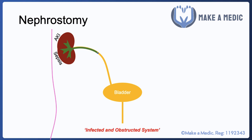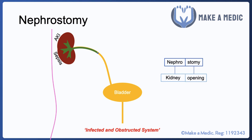Nephrostomy is done in an emergency when you have an infected and obstructed system. Assessment will likely reveal an AKI and sepsis, requiring urgent decompression. As the name suggests, it involves creating an opening into the kidney — passing a tube via the skin into the renal pelvis so that urine that has accumulated and backlogged into the kidney can be drained.